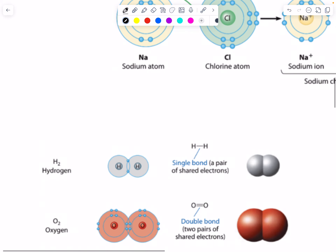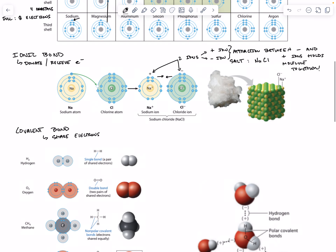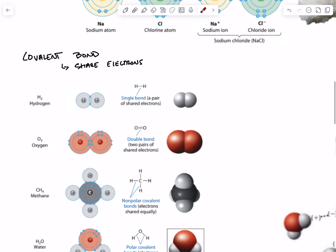The next type of bond we're going to talk about is a covalent bond. This is more of a sharing-electrons situation. Unlike ionic bonds, where one atom donates an electron and one receives it, resulting in two ions that are held together, covalent bonds really share electrons, and that's what creates their attraction to one another.